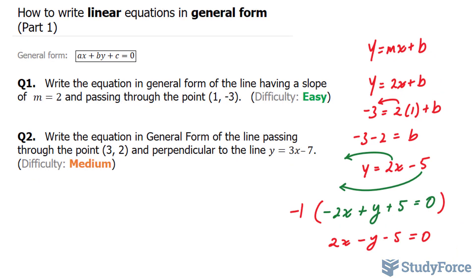In question 2 we're asked: write the equation in general form of the line passing through the point (3, 2) and perpendicular to the line y equals 3x minus 7. Notice the difference between this question and the previous one. In the previous one we were explicitly told the slope was 2, whereas this one we're not. We're told that it is perpendicular to the line y equals 3x minus 7.